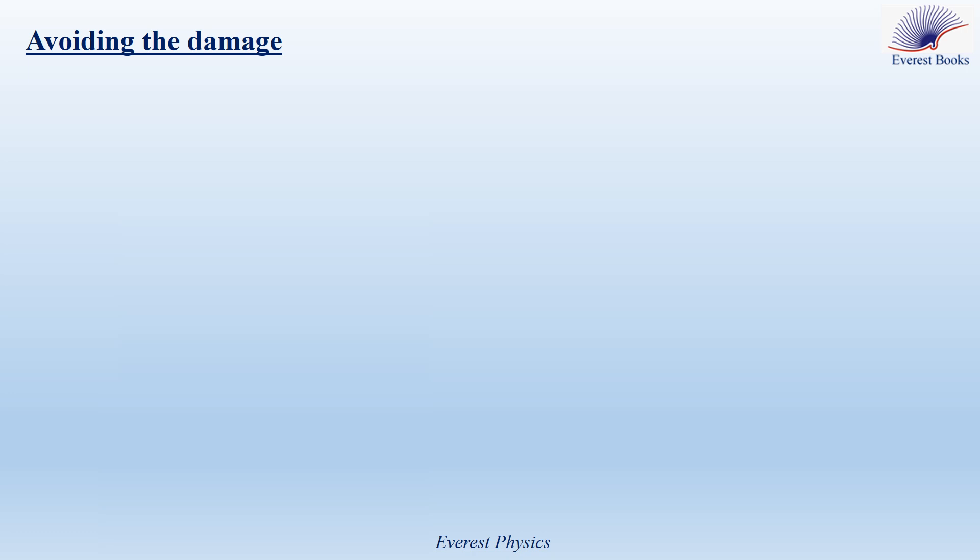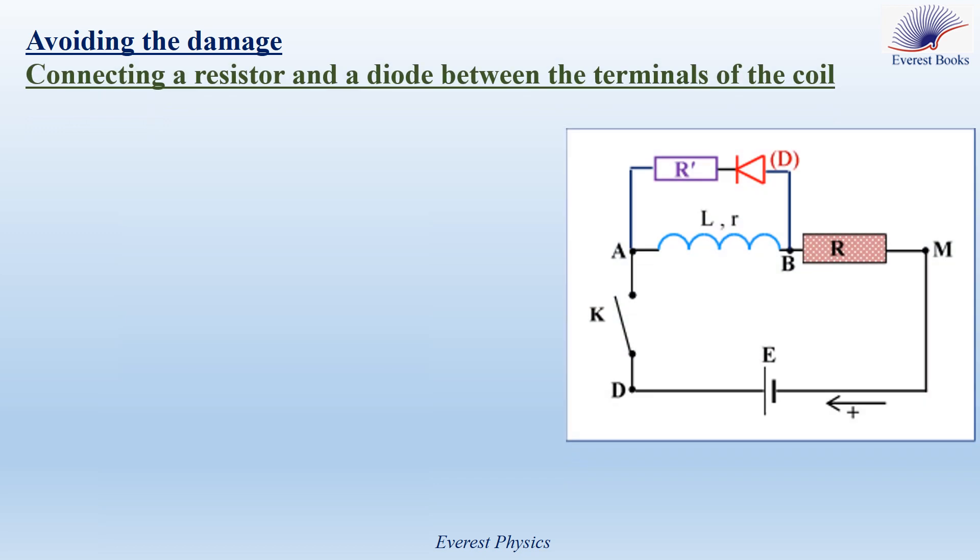We know that sparks damage the switch. To avoid this damaging, we introduce in this video two methods. The first method is connecting a resistor and a diode between the terminals of the coil. But what is a diode, and how does a diode work?